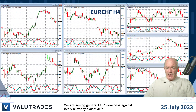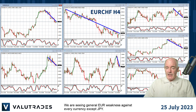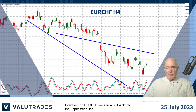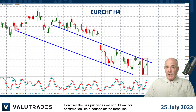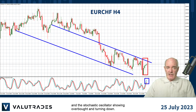We are seeing general Euro weakness against every currency except the Yen. However on Euro Swiss we see a pullback into the upper trend line. Don't sell the pair just yet as we should wait for confirmation like a bounce off the trend line and the stochastic oscillator showing overbought and turning down.